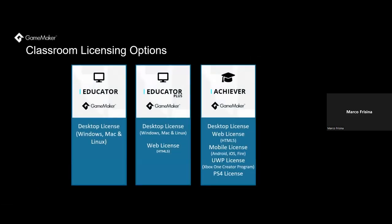Moving to the licensing options: we have three types of licenses available, which can be purchased through Studica. First, the Educator license provides access to desktop export on either Windows, Mac, or Linux. The Educator Plus provides access to desktop and web exports. The Achiever provides access to desktop, web, mobile, and now even PlayStation 4 and Xbox One. There are one- to two-year options available for all licensing options. The seats for these licenses are concurrent, so they can be used for multiple classes. GameMaker can be used on PC and Mac — not yet on Chromebook, but due to overwhelming demand from these webinars, we do have a Chromebook version in development.